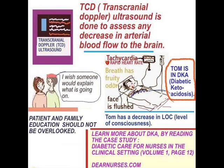There is a case study on dearnurses.com on subarachnoid hemorrhage that will help you understand more. We should also be concerned about patient and family education — nobody communicating with them should not be overlooked. I also referenced DKA, diabetic ketoacidosis, which is very important because it can happen to a diabetic with type 1 diabetes. There is a case study at dearnurses.com: Diabetic Care for Nurses in the Clinical Setting, Volume 1, page 12.